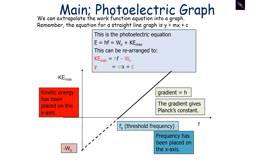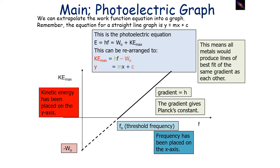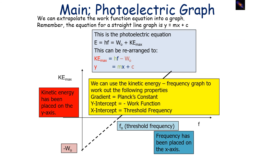Comparing to y = mx + c, with kinetic energy on the y-axis and frequency on the x-axis, we can identify several key properties. The gradient of the line m is equal to Planck's constant h. The x-intercept is the threshold frequency — the frequency needed to overcome the work function. This means all metals produce lines of best fit with the same gradient, because the gradient equals Planck's constant, which is constant for all metals. To summarise the graph: the gradient is Planck's constant, the y-intercept is the negative work function, and the x-intercept is the threshold frequency.